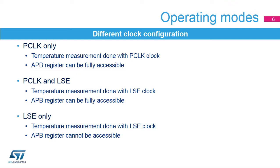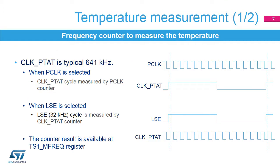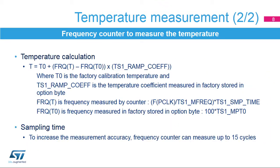Note that the PCLK clock is mandatory to access the APB registers. The digital temperature sensor block generates a clock output frequency proportional to the temperature. This frequency can be measured by the PCLK clock, or when LSE mode is selected, LSE clock frequency is measured by CLK PTAT. The counter data is available in the TS1 MFREQ register.